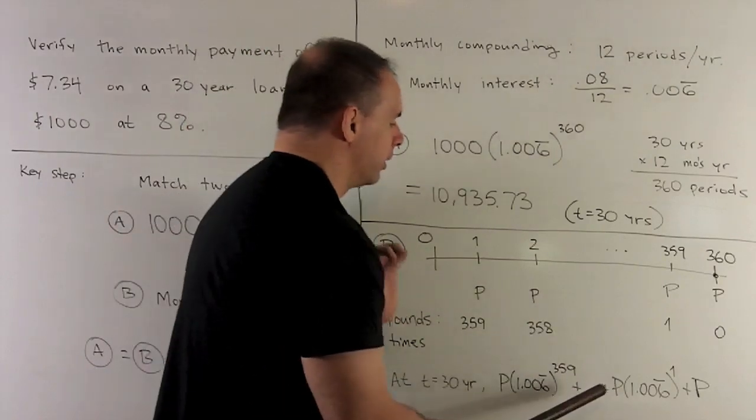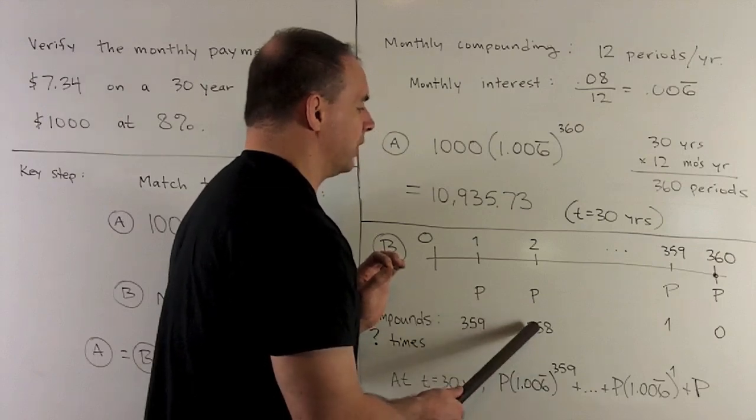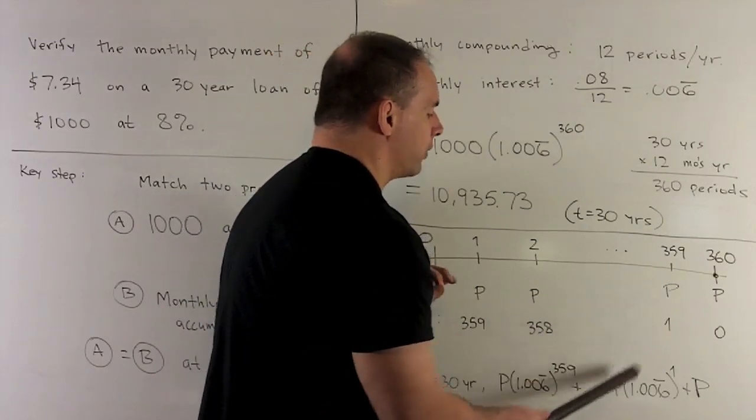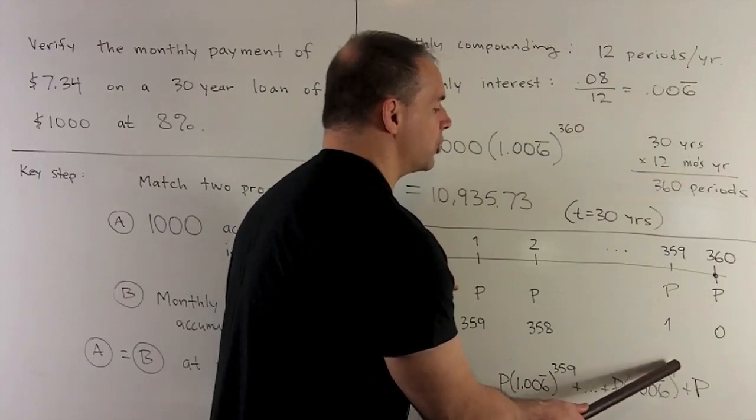This one's going to be worth P times 1.006 repeating to the 358. This one's going to be worth P times 1.006 repeating raised to the first power.